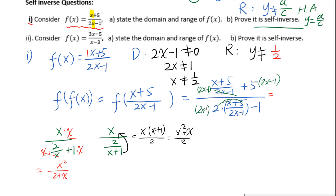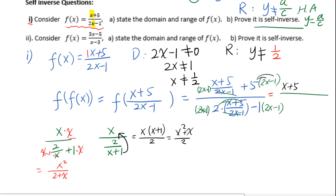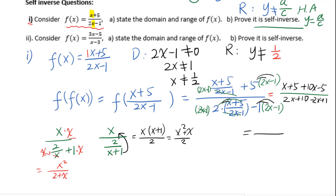Multiplying by 2x minus 1 and applying the distributive property throughout, the numerator becomes x plus 5 plus 5 times (2x minus 1), giving 11x. The denominator becomes 2 times (x plus 5) minus (2x minus 1), giving 11. So f of f of x equals 11x over 11, which equals x. The proof is complete.